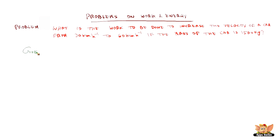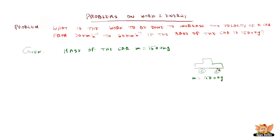The given parameters are: mass of the car m is equal to 1500 kg. The car starts with a velocity of 30 km per hour, so u is 30 km per hour, and then it reaches a point where the velocity has increased to 60 km per hour. We need to find the work done for the car to increase its velocity from 30 to 60 km per hour.